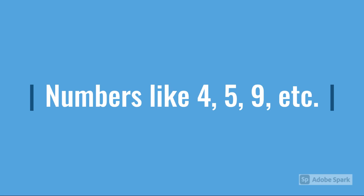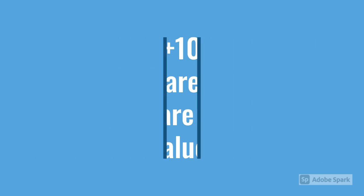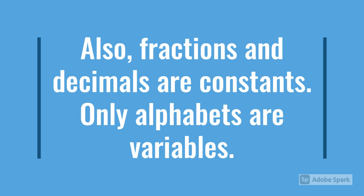Only alphabets are represented as variables. In x plus 10 equals 45, 10 and 45 are constants as they are a known value. They are not unknown. Also, fractions and decimals are constants too. As I said before, only alphabets are variables.